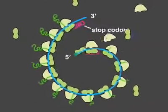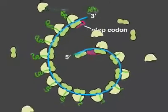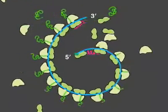When a ribosome reaches a stop codon, the ribosome and the new protein dissociate from each other and from the mRNA.